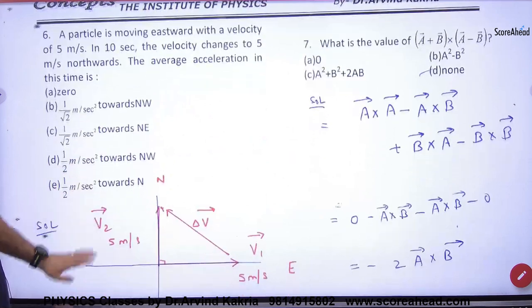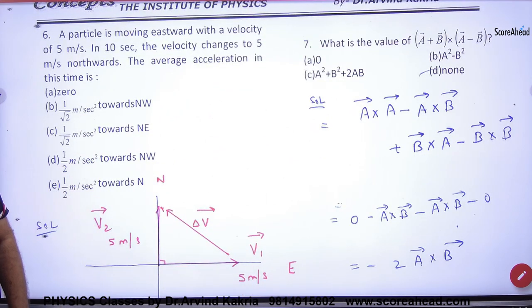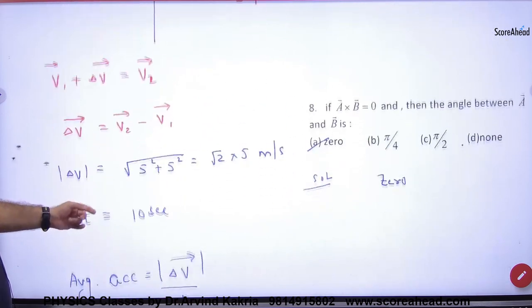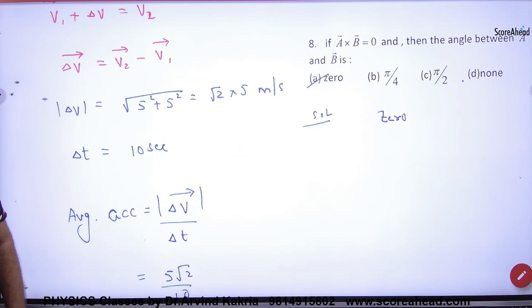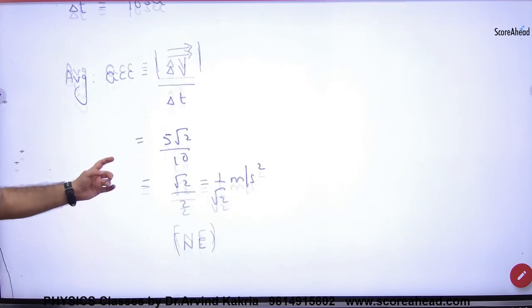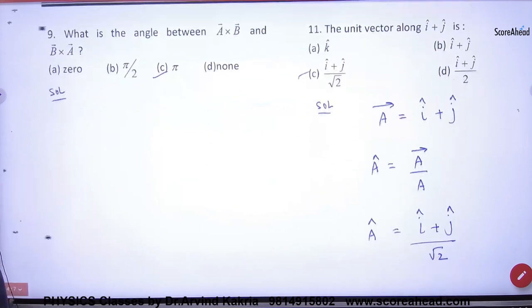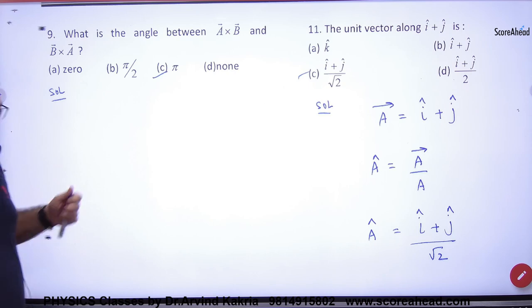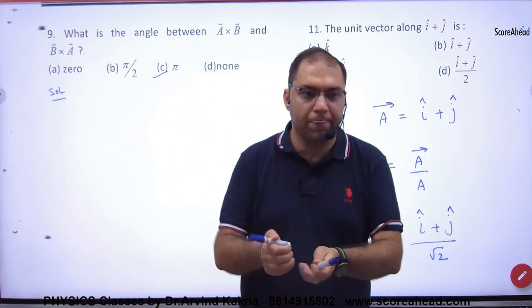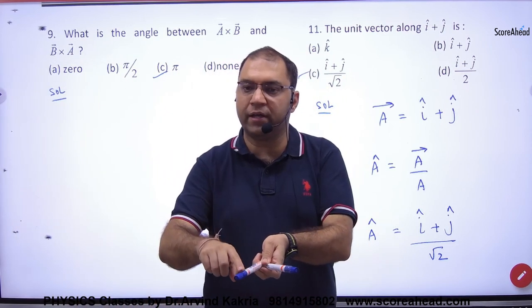Question number 7 made out. Question number 8 made out. Is it clear? Question number 9 made out. See, this is simple. There is one vector, A vector and B vector.